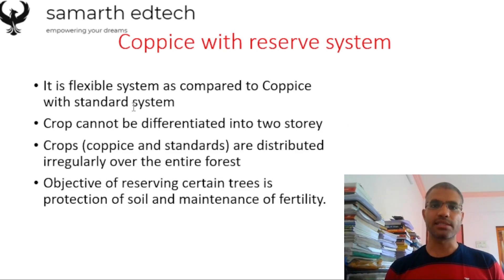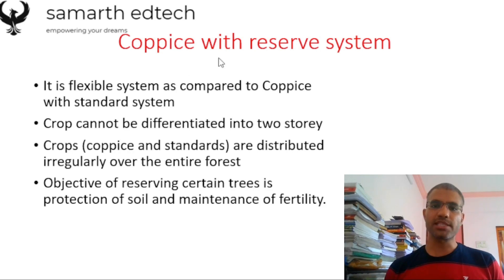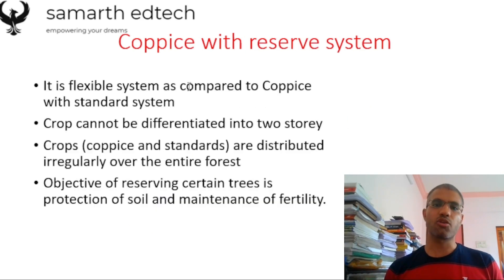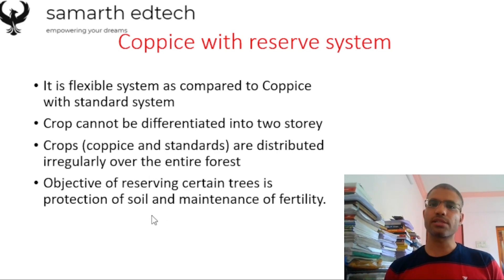The Coppice with Reserve System is a flexible system compared to the Coppice with Standards System. The Coppice with Standards System is a very rigid system, whereas the Coppice with Reserve System is a kind of elastic system. In this system, the crop cannot be differentiated into two storeys — unlike the Coppice with Standards System where the crop is differentiated into standards and coppice storeys. The crops are distributed irregularly over the entire forest. The objective is to reserve certain trees so as to provide protection for the soil and maintain soil fertility.